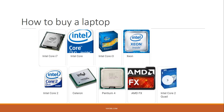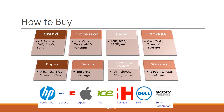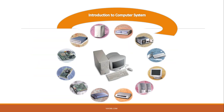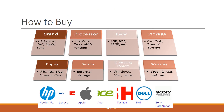If you have a computer, you will have a brand, a processor, RAM, storage, a display unit, backup, an operating system, and a warranty. If you have a computer, you will need to check these specifications.